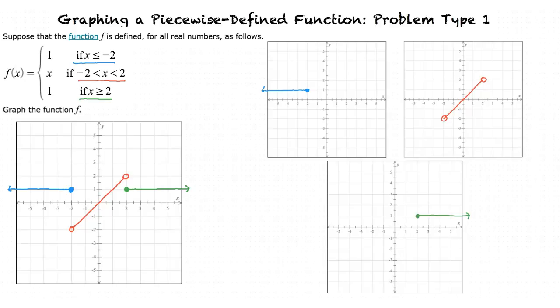To graph a piecewise function: first, graph each part of the function individually. Then solve for the endpoints of each graph by substituting in the x values given and solving for the corresponding y values. Plot the endpoints according to the specified domains, then combine all the graphs to find the resulting piecewise function.